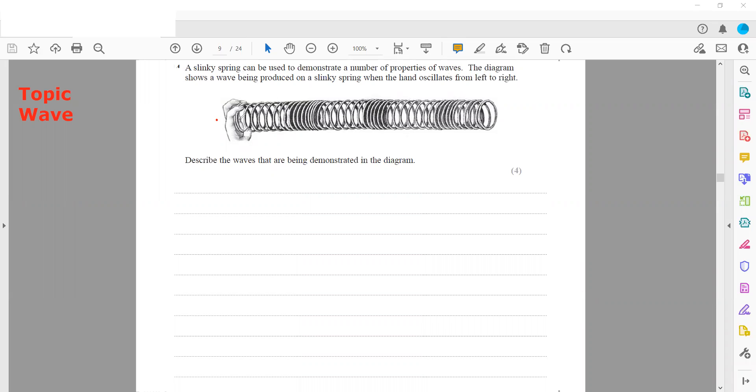The hand oscillates from left to right, producing a wave. When we describe the wave being demonstrated in the diagram, we can see the direction of vibration and the direction of energy transfer are parallel. This means the wave produced is a longitudinal wave.